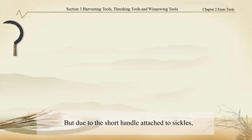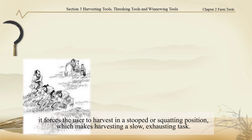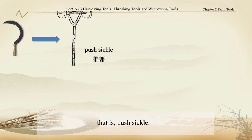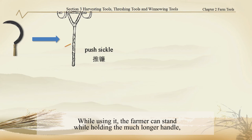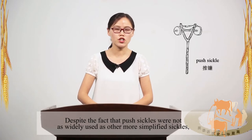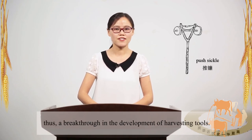But due to the short handle attached to the sickle, it forces the user to harvest in a stooped or squatting position, which makes harvesting a slow and exhausting task. Thus, the appearance of another prominent harvesting tool during the Song and Yuan dynasties cannot be ignored — that is the push sickle. While using it, the farmer can stand while holding a much longer handle and push it forward against the top layer of the field. Despite the fact that push sickles were not as widely used as other more simplified sickles, its creation bridges traditional sickles and modern grain harvesting machines — thus a breakthrough in the development of harvesting tools.